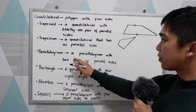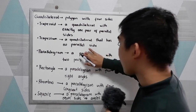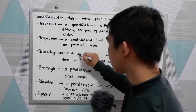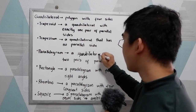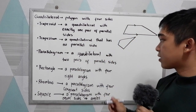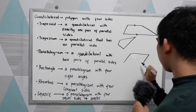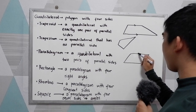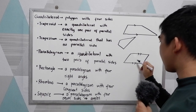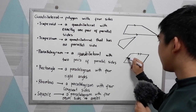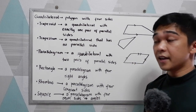Next is parallelogram. A parallelogram is a quadrilateral with two pairs of parallel sides. So if we're going to draw a parallelogram, it can be like this one. This side is parallel to this one, and this side is parallel to this one — so two pairs of parallel sides.